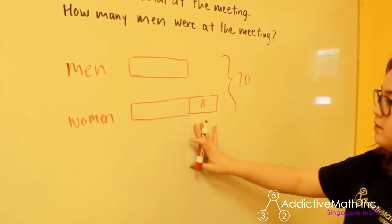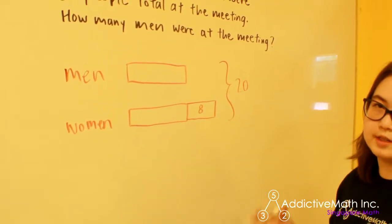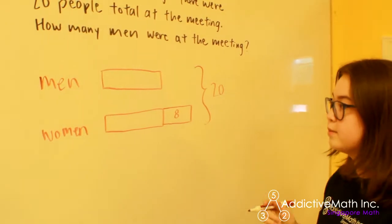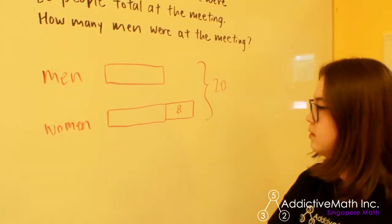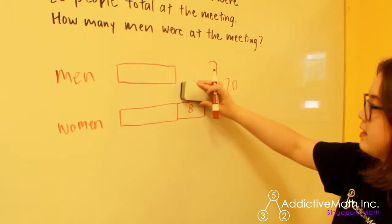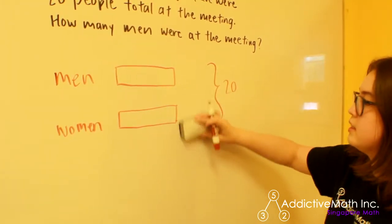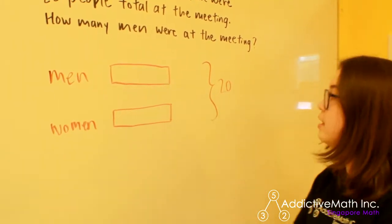Now what I'm actually going to do is this is sort of the equivalent in bar modeling of isolating x. I'm going to get rid of our knowns. So I'm going to remove this bar right here. It says eight. Since I've subtracted eight from here, I have to update this also.